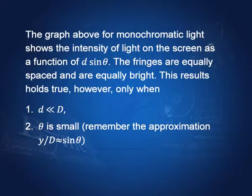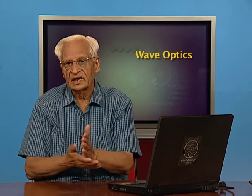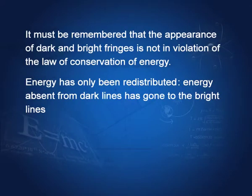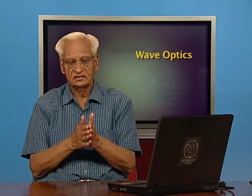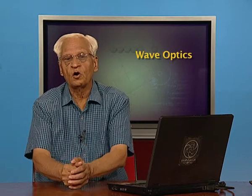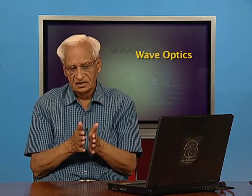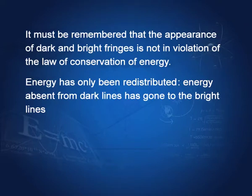This result holds only under two conditions: d << D (the slit separation is much less than the slit-to-screen distance), and θ is small so that tanθ ≈ sinθ ≈ y/D. It must also be remembered that the appearance of dark and bright fringes does not violate energy conservation — energy from dark fringe regions is simply redistributed to bright fringe regions.